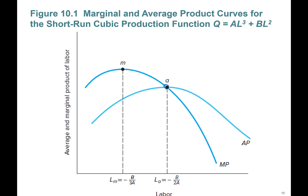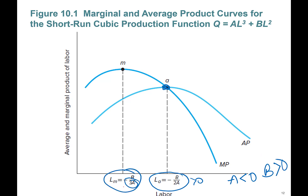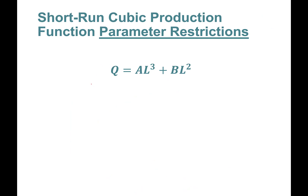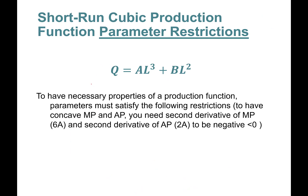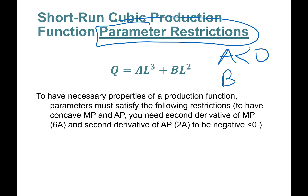And average product begins to diminish beyond LA = -b / 2a. As you can see, the point at which average product starts diminishing is -b / 2a — a positive number since a is negative and b is positive. And -b / 3a is smaller than -b / 2a, so LM comes before LA. Let's talk about parameter restrictions: we need a to be negative and b to be positive.